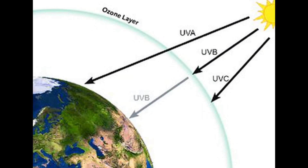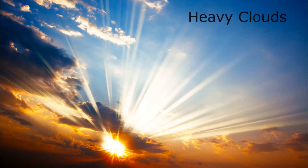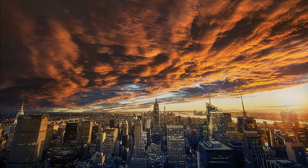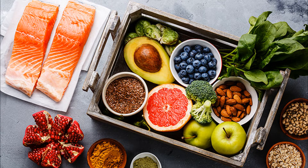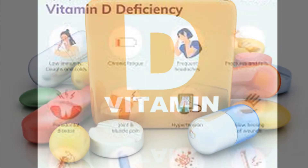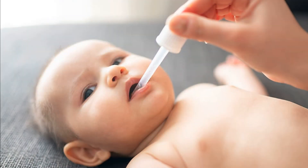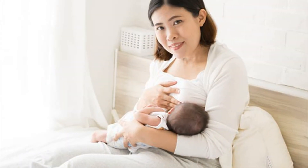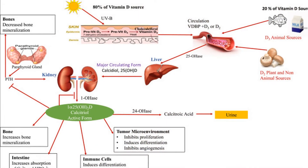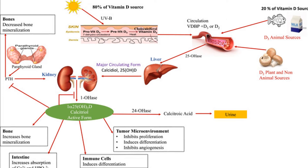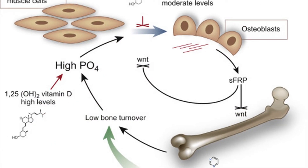The ultraviolet rays of the sun which promote vitamin D synthesis can be blocked by heavy clouds, smoke, or fog. People who are unable to go outdoors frequently, or dark-skinned people who live in cloudy or smoggy cities, should consume foods fortified with vitamin D or therapeutic supplements to prevent deficiency. Vitamin D deficiency is also common in infants who are solely breastfed without exposure to sunlight. A deficiency of vitamin D leads to inadequate absorption of calcium and phosphorus from the intestine.